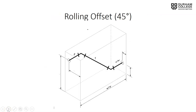Here we have a 45-degree rolling offset. The piece of pipe inside the box is near the top left-hand corner, going in straight — that's pipe P. Pipe P goes from the wall of the box to the center of the 45. Then from the 45, the pipe rolls down and to the right over to the center of the next 45. That is our T piece of pipe, otherwise known as our travel.